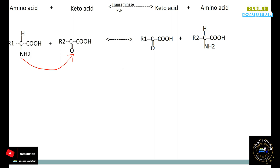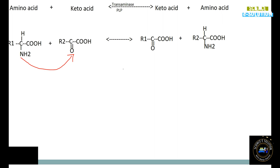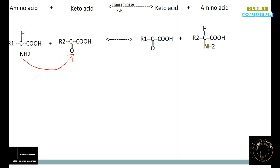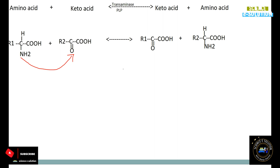Looking at the structures: the amino acid has an R1 carbon skeleton and the keto acid has an R2 carbon skeleton. There is transfer of the amino group from the amino acid (R1) to the keto acid (R2). As a result, the amino acid associated with R1 is converted into a new keto acid, and the keto acid associated with R2 forms a new amino acid. This is how a new keto acid and a new amino acid are formed after the transamination reaction.